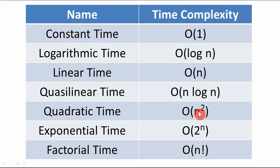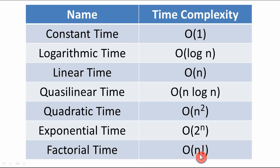Factorial time complexity grows very rapidly. If n is 2, then 2 factorial is 2. If n becomes 5, operations become 5 factorial = 120. As n increases, operations grow factorially — even more than exponentially (exponential is 2 raised to n, but factorial grows faster). So from n=2 to n=5, operations jump from 2 to 120, showing how complexity increases and efficiency decreases dramatically.